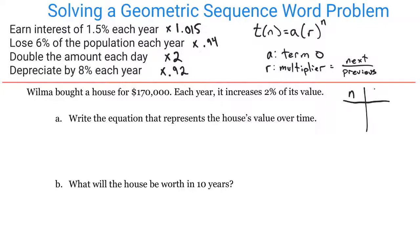If you write out a table for your terms, you'd have n and T(n). At year 0, initially, that would be $170,000. We know it increases by 2% of its value every year, so that's growing. Our multiplier, if you turn this percent into 0.02, and it's increasing, means it's greater than 1. So our multiplier is 1.02.